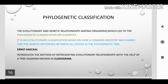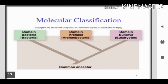Types of classification. The evolutionary and genetic relationship among organisms is called phylogenetic classification. It is an evolutionary classification based on how the common ancestor was shared and the genetic difference between species. Next, molecular classification.